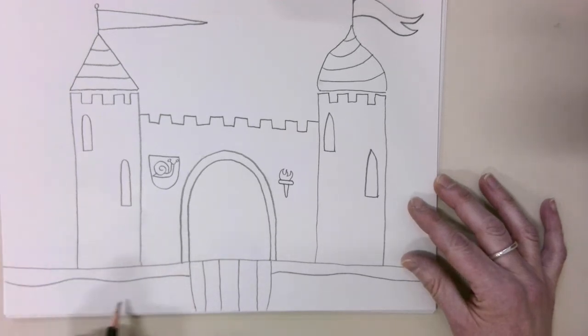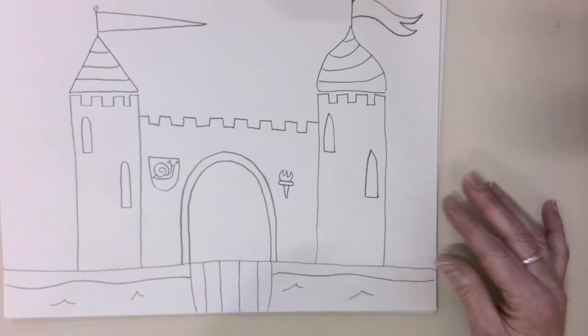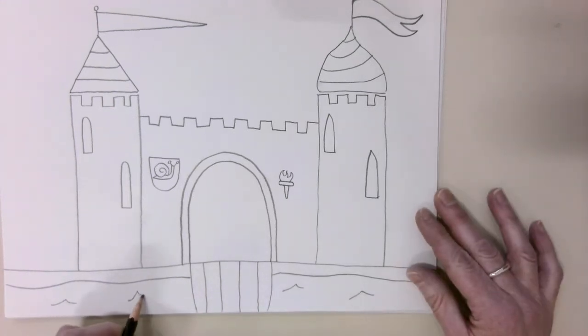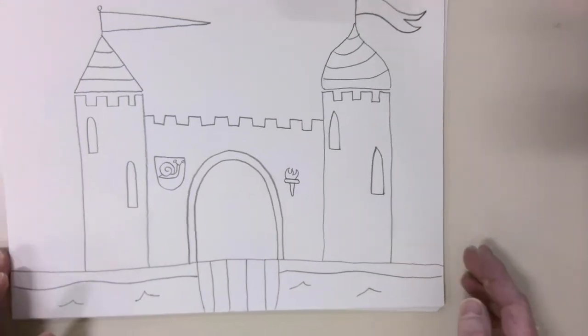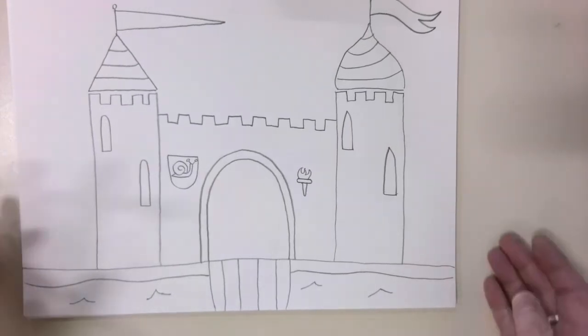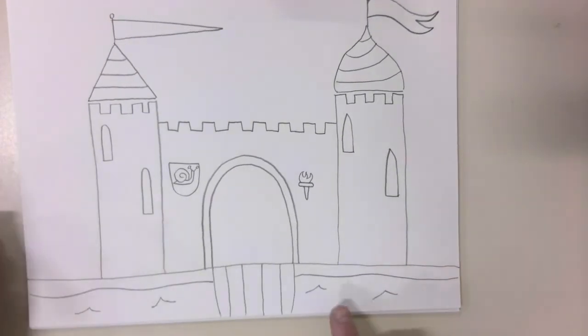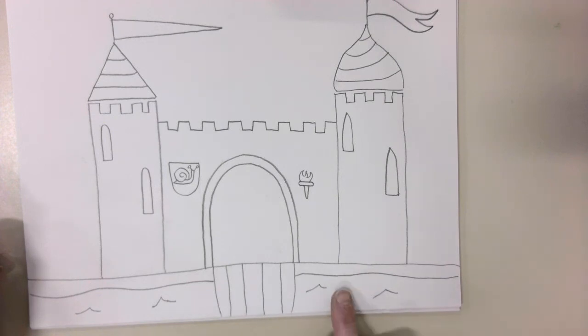I'm going to draw another shape down here and this is going to be the moat. You draw a little wavy shapes to make it look like there's water down there. Now they actually did not put alligators in moats. You would not want to swim or let anything swim in that moat. It was gross.